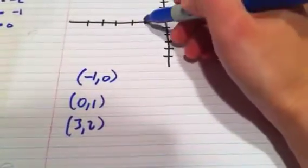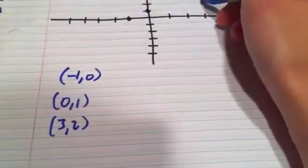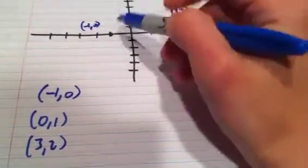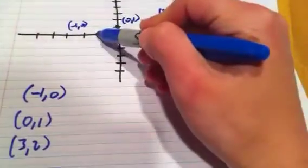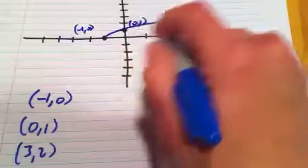So this is negative 1, 0, 0, 1, and 3, 2. So negative 1, 0, 0, 1, 3, 2, and it stops there. So it starts here, stops there, and that's the first guy.